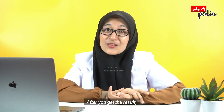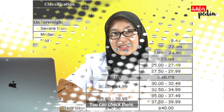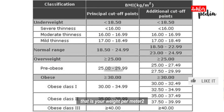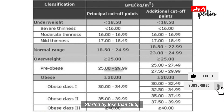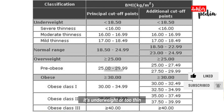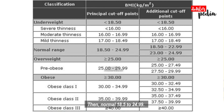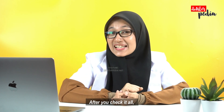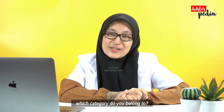After you get the result, then match it to the following table. There is the BMI table. The unit is kilogram per meter squared. You can see the values: less than 18.5 is underweight or too thin; normal is 18.5 to 24.99; overweight is above 25; and obesity is above 30. After checking, which category do you belong to?